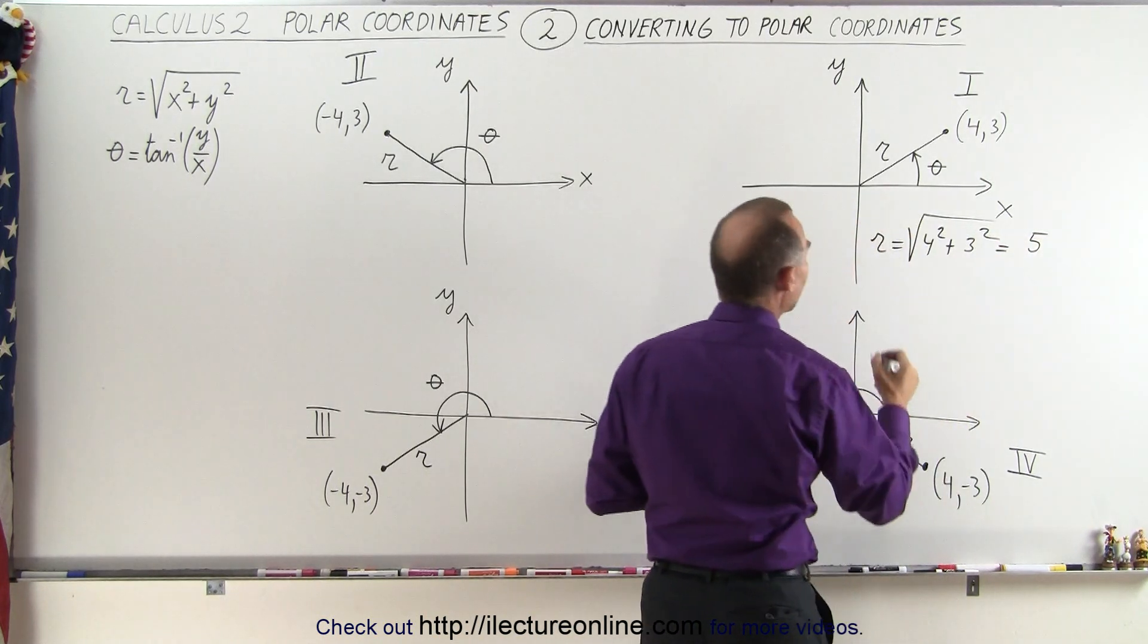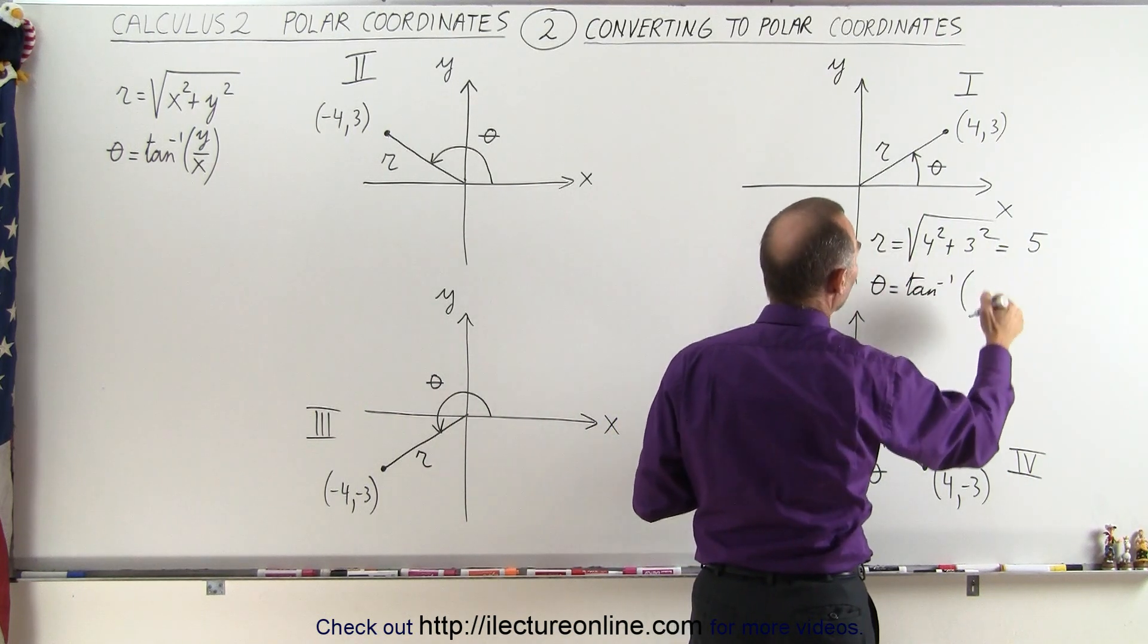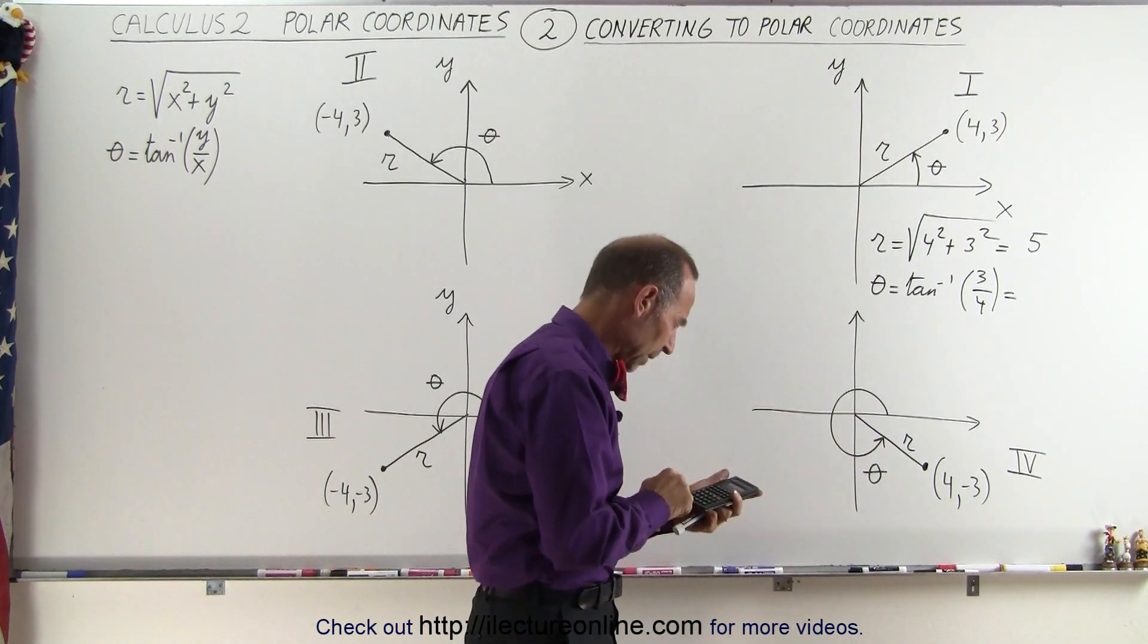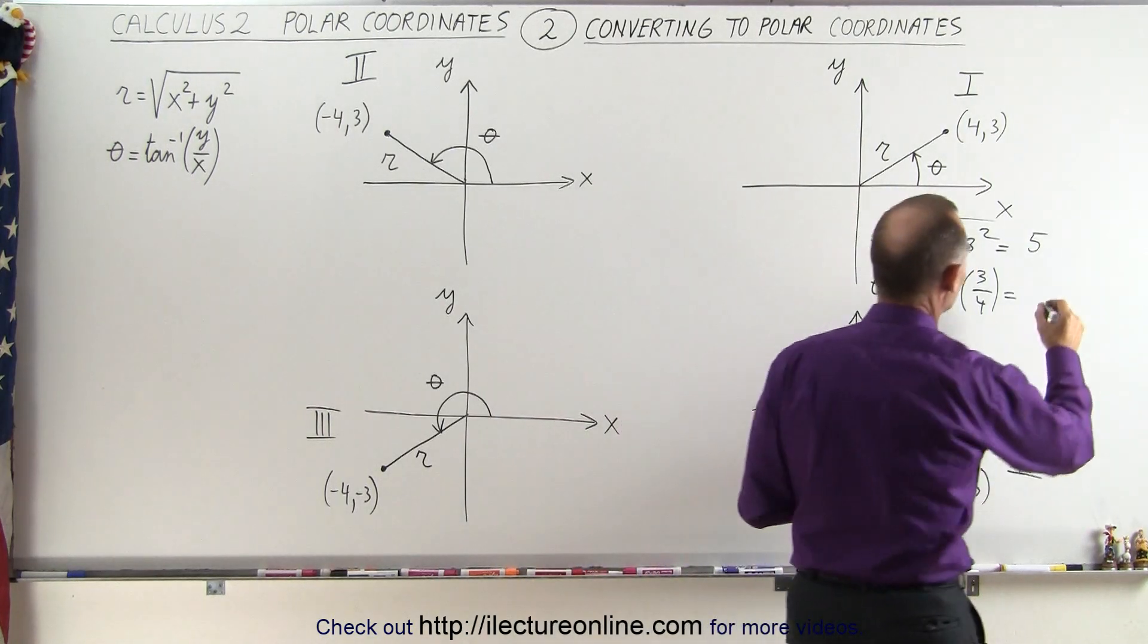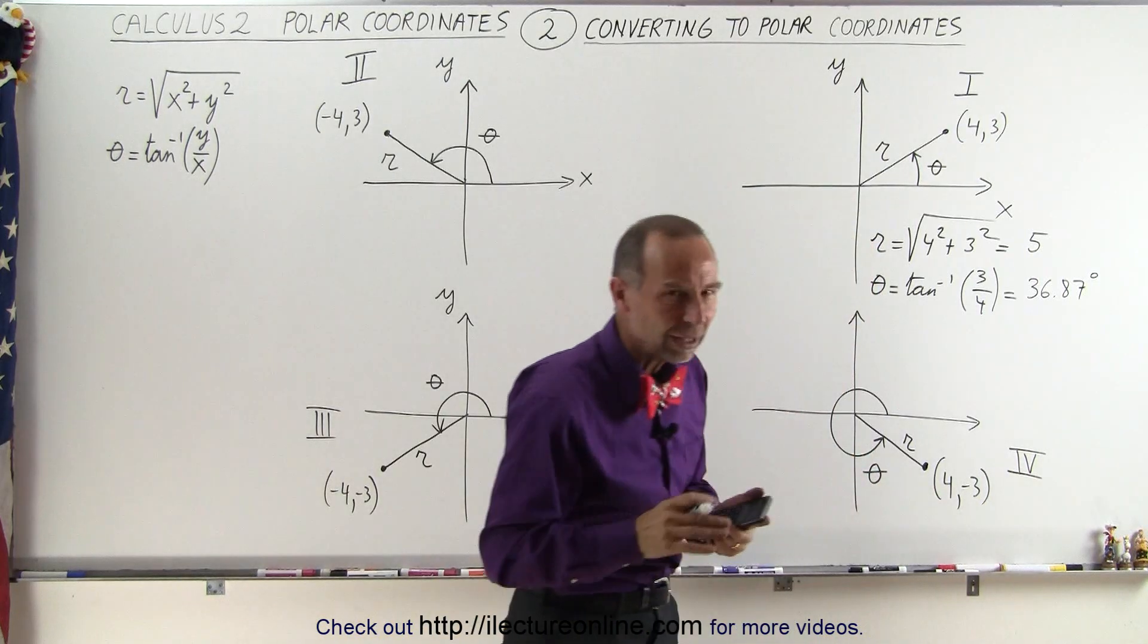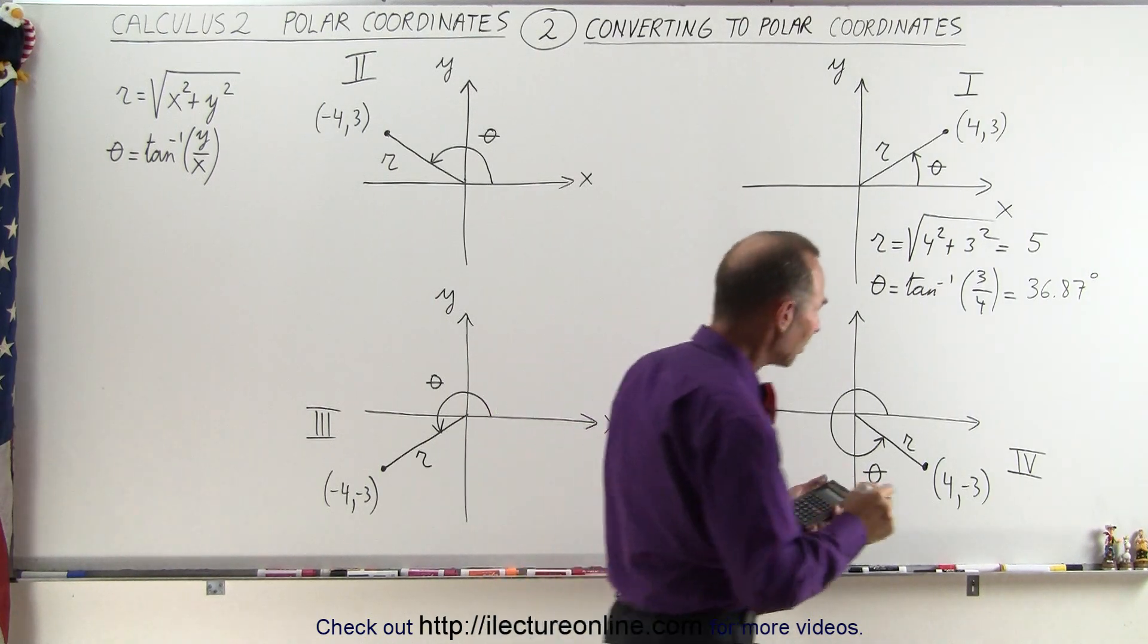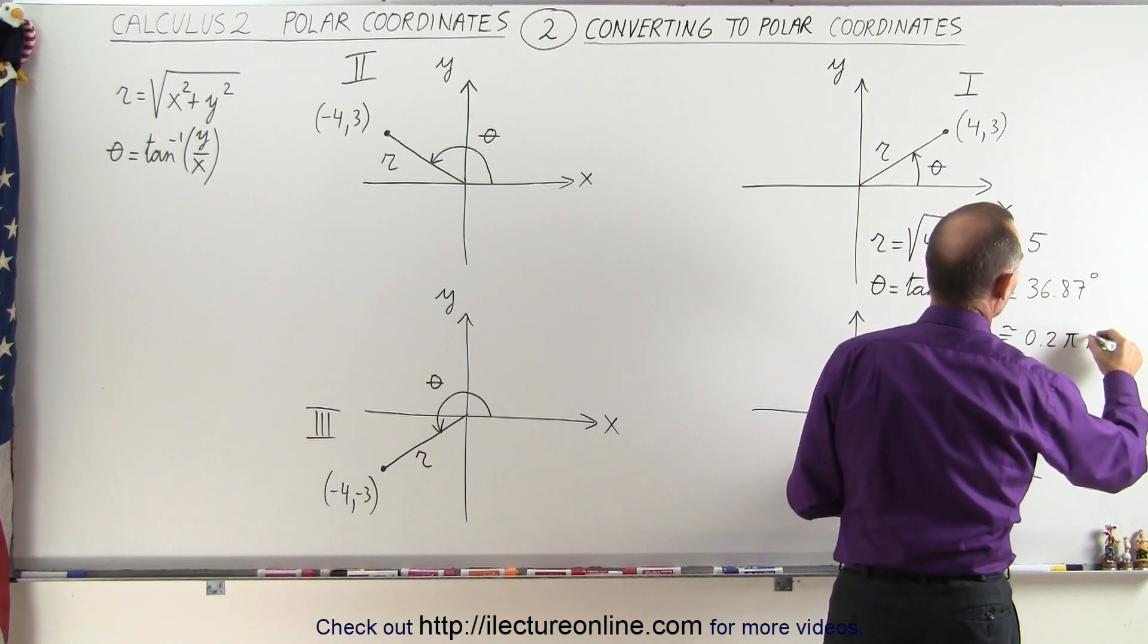But the angle theta, that's equal to the inverse tangent of y over x. y would be 3, x would be 4, so that would be the inverse tangent of 0.75. Take the inverse tangent, that gives us 36.87 degrees. And if we want to convert that to radians, we know that 180 degrees is pi radians, so divide by 180, and we get approximately 0.2 pi radians.